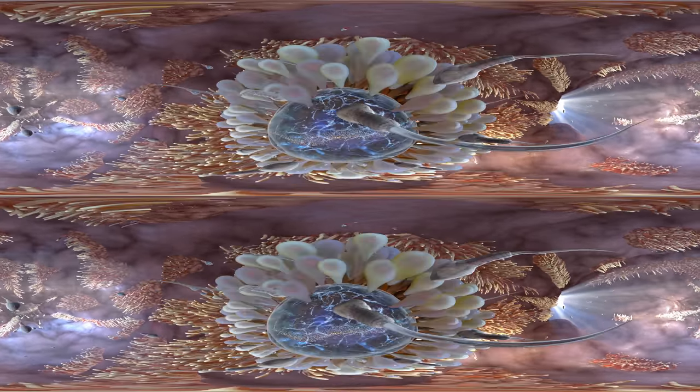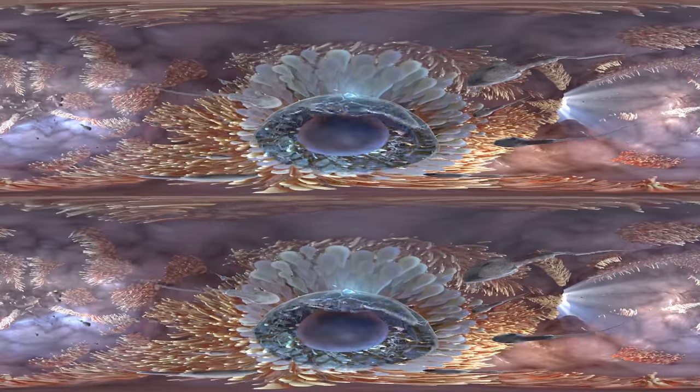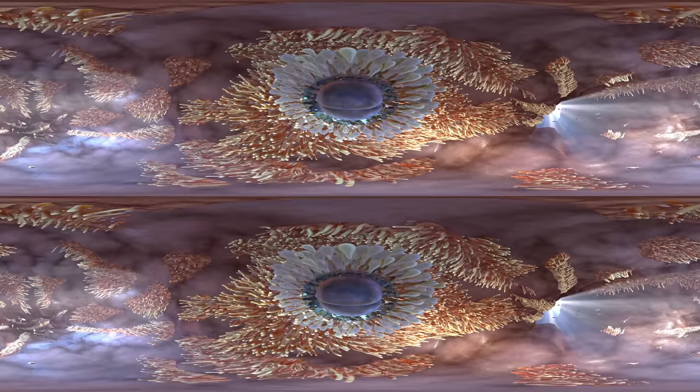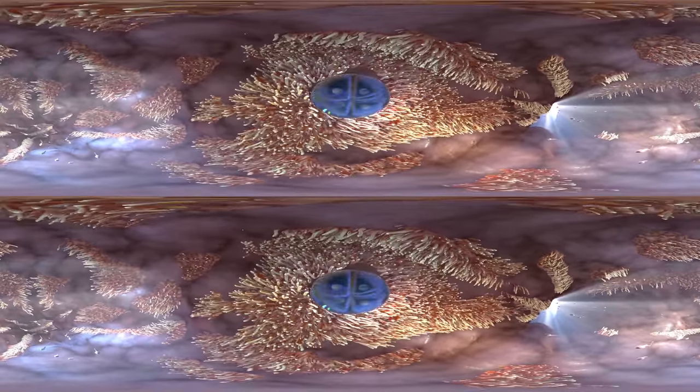Inside the zona pellucida is a narrow fluid-filled space which surrounds the egg cell. The first sperm to make contact will fertilize the egg. But how does this process look if sperms and egg cell are not in optimal condition?